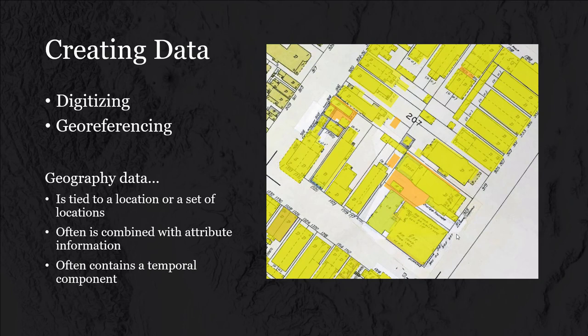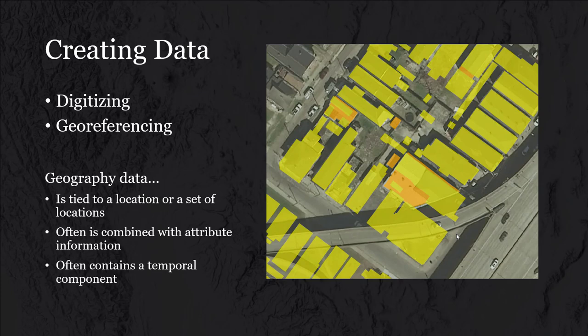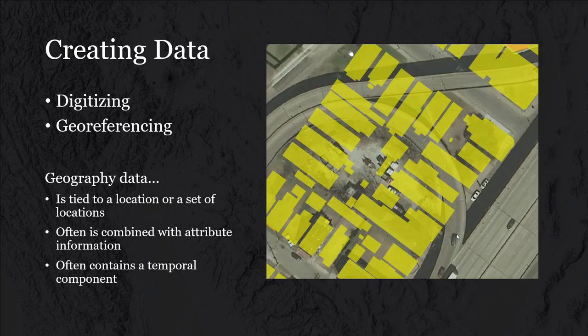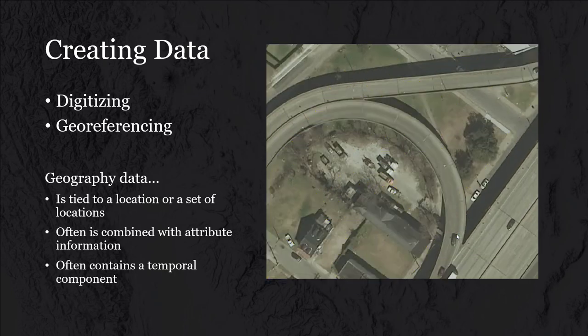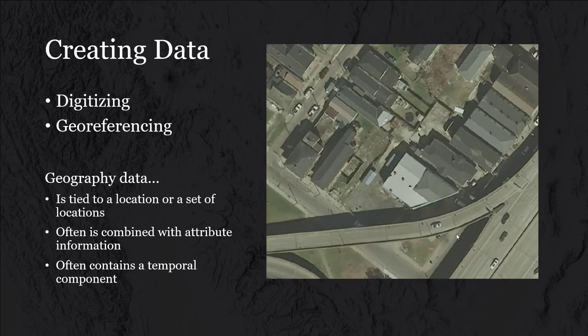As a reminder, geographic data is tied to a location or set of locations. It's often combined with attribute information — in this case capturing the year that the information existed, where the yellow buildings are from 1950 and orange from today. And it often contains a temporal component, which similarly would be the year that data was captured.